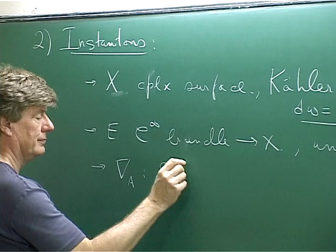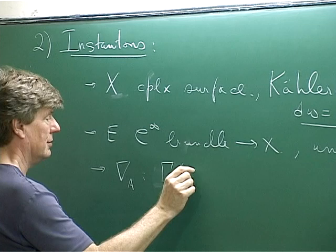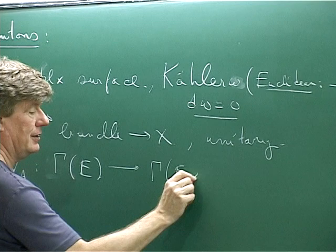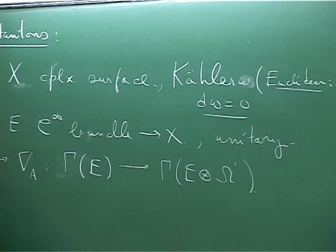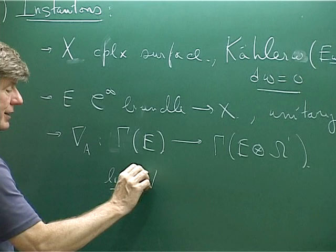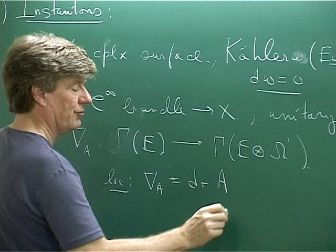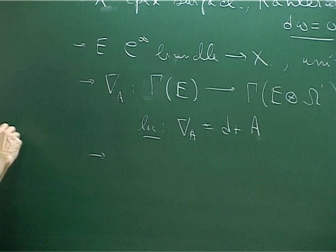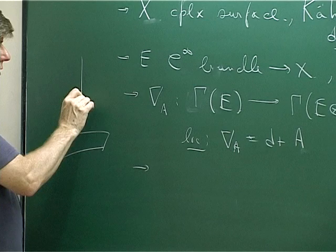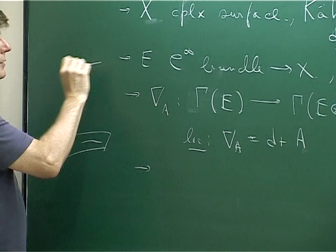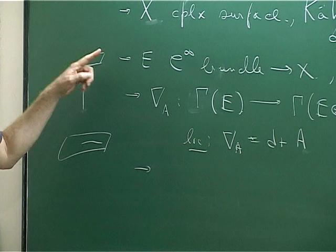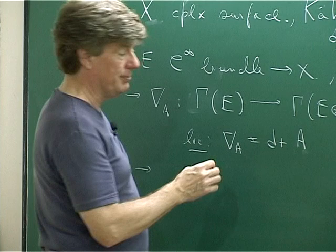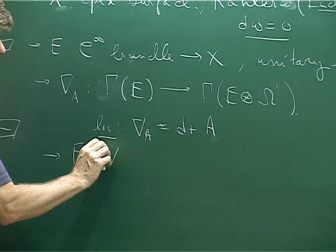I'm going to be looking at connections on these bundles — maps from sections of E to sections of E tensored with the one-forms. It's a covariant derivative, and locally, nabla_A looks like D plus a matrix of one-forms. This comes with a curvature: a covariant derivative gives you a way of taking a section and transporting it along a curve, and the curvature sees what happens when you take it around a little square.